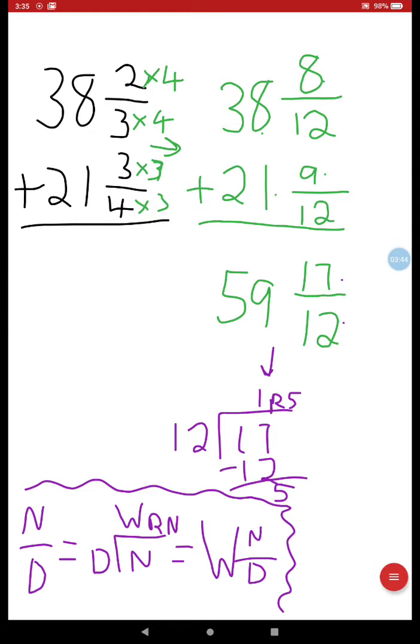Okay, now, so I've got 1 and 5 twelfths. But remember, I've got to add this one whole to the 59. What's 59 plus 1? Very good. That's 60. And now I have the remainder 5 on the top. 12 is still my denominator. Can I simplify it? No, because 5 is prime.